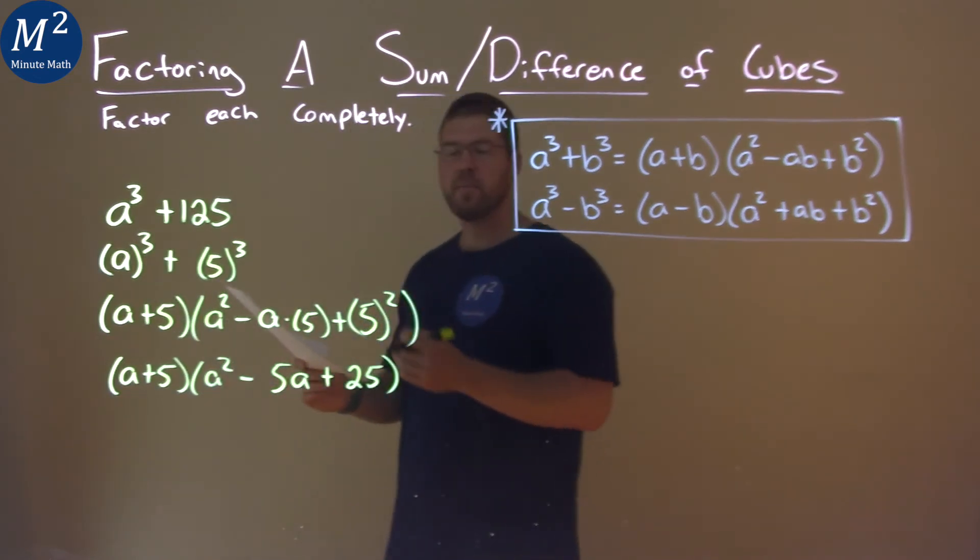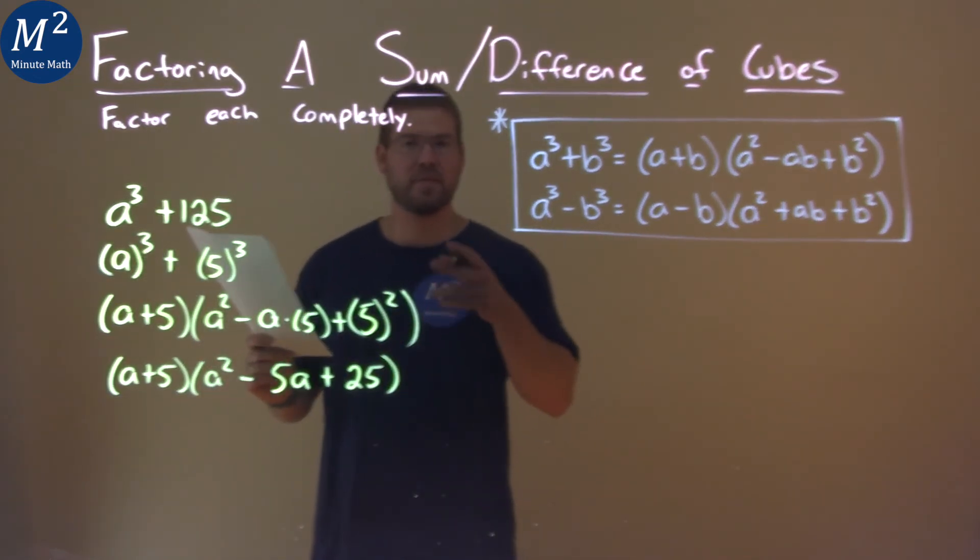And so our final answer is a plus 5 times a squared minus 5a plus 25.